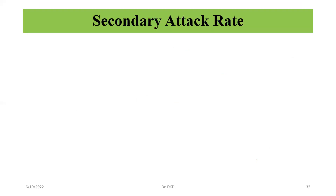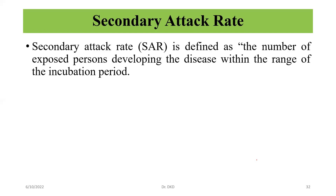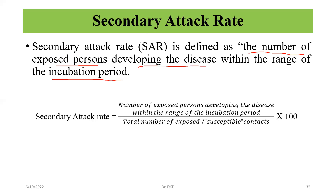Now we will talk about secondary attack rate. Secondary attack rate is defined as the number of exposed persons developing the disease within the range of the incubation period, divided by the total number of exposed or susceptible contacts, multiplied by any constant.